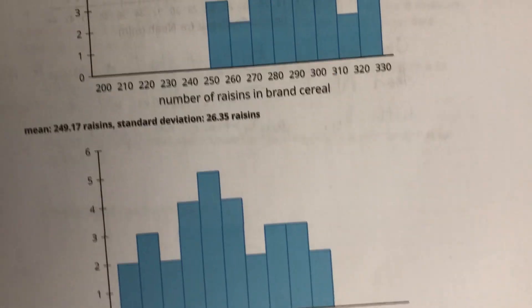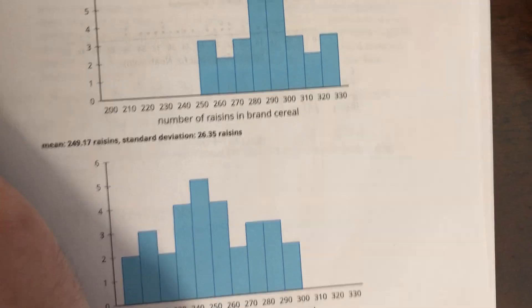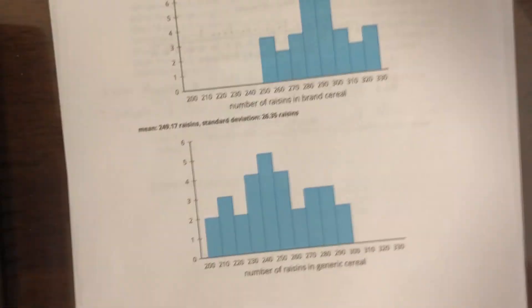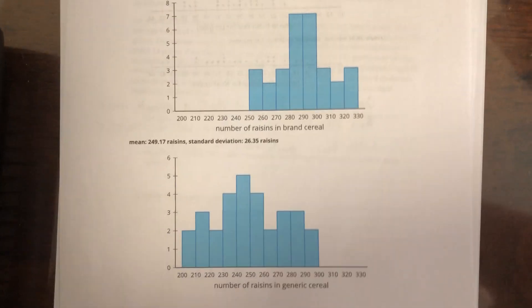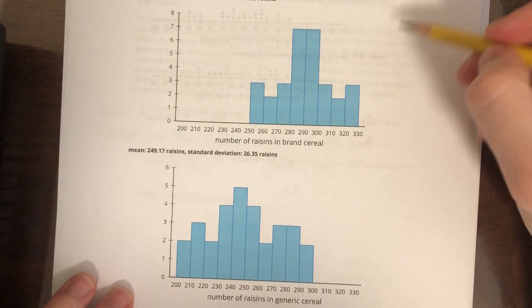Okay, number three. All right, the number of raisins in a cereal with a name brand and the generic version of the same cereal are collected for several boxes.